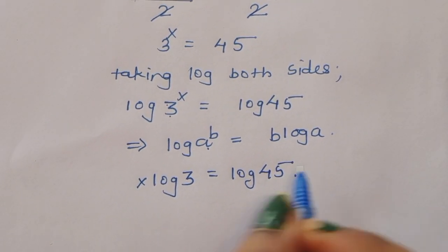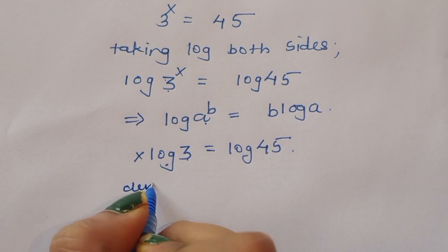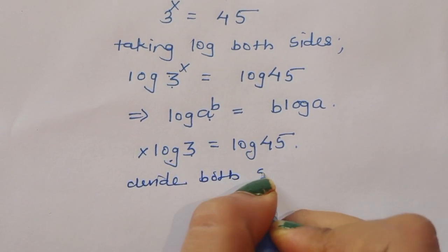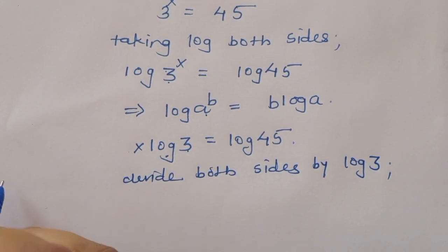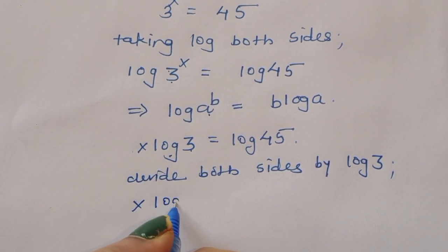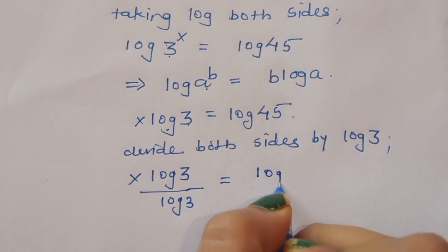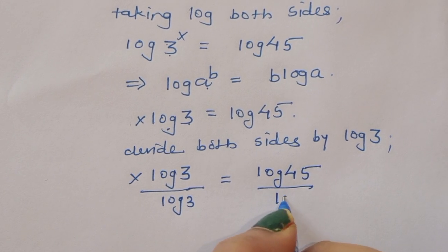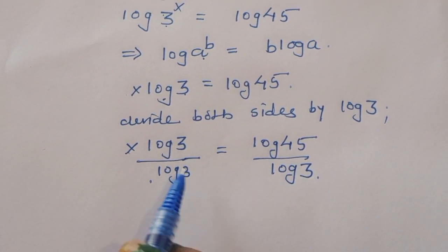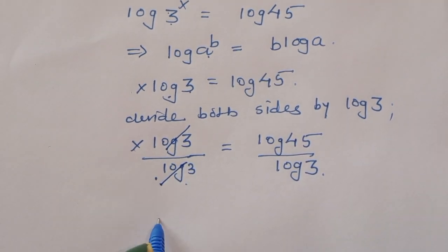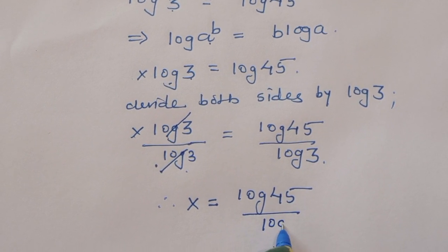Now we can divide both sides by log of 3, because we have to find out the value of x. Dividing both sides by log of 3, we get x log of 3 divided by log of 3 is equal to log of 45 divided by log of 3. The log of 3 cancels, therefore x is equal to log of 45 divided by log of 3.